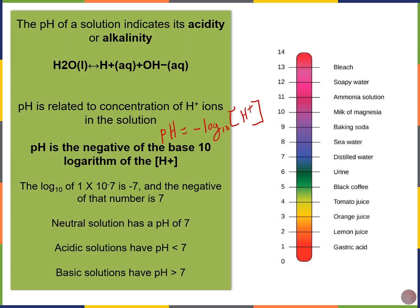In one of our future labs, we're going to be working with pH, acids, and bases in much more detail. If I wanted to calculate pH given the proton concentration of a solution, I could do so using this equation. Neutral solutions have a pH of 7, acidic solutions will be less than 7, and basic solutions will have a pH greater than 7.